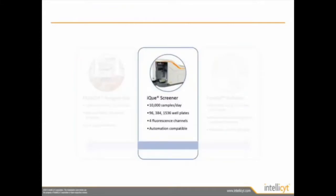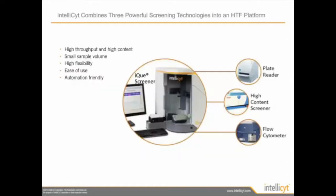The first component we offer is the instrument. You can sample up to 10,000 samples per day. The system can work with three different plate formats: 96, 384, and even 1536 well plates. You can use the LabSite Echo to do your sample prep to miniaturize your assay. The IQ Screener can look at four fluorescent channels at a time and can be integrated with automation systems. The IQ combines three very powerful screening technologies: the plate reader, high-content screener, and flow cytometer. With these three combinations, we are able to generate high content data very quickly.